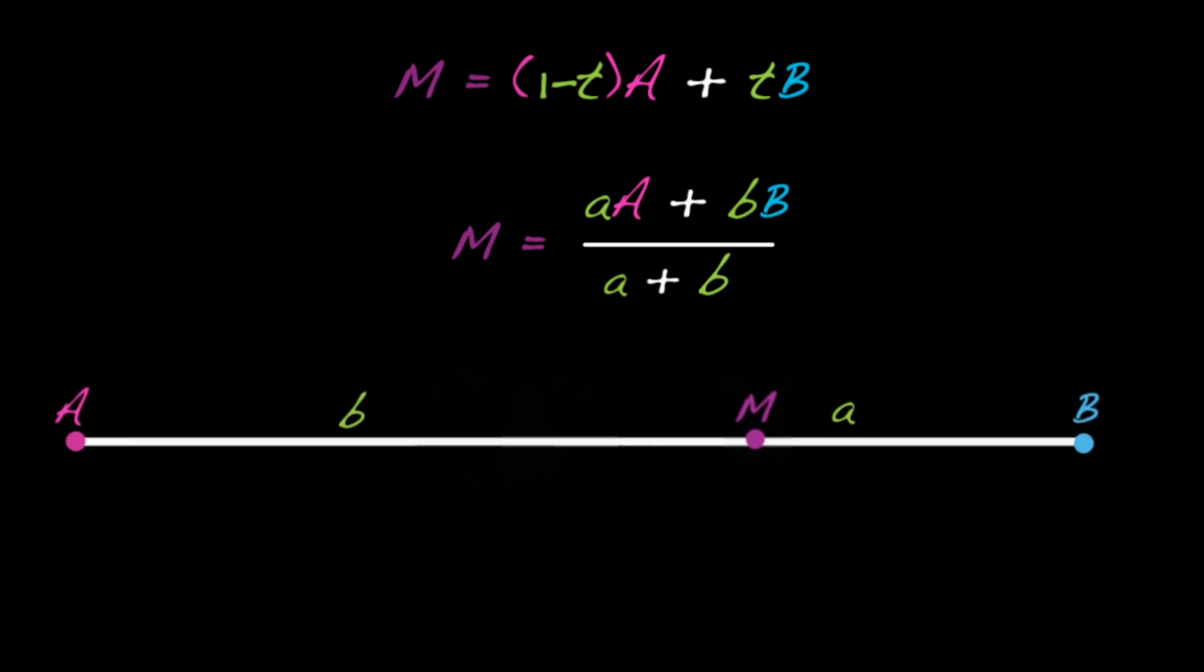The geometry of this more symmetric form says that the ratio of the lengths am to mb is little b to little a.